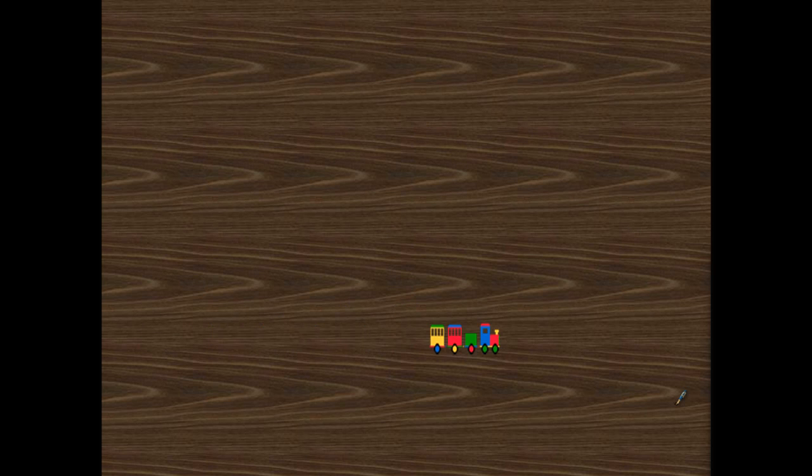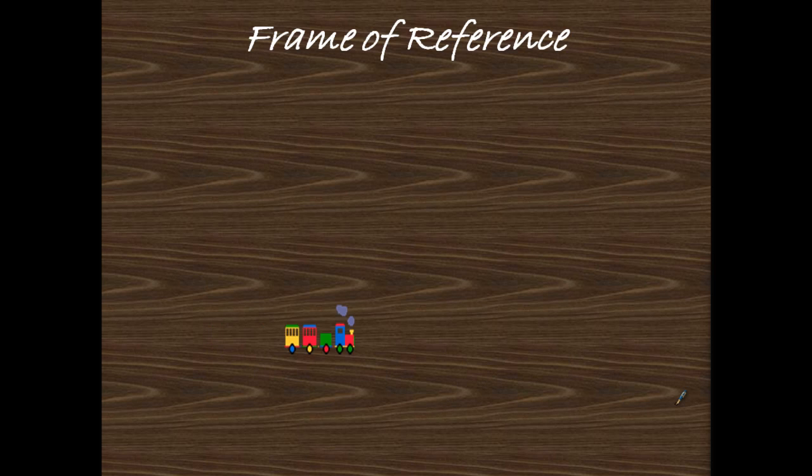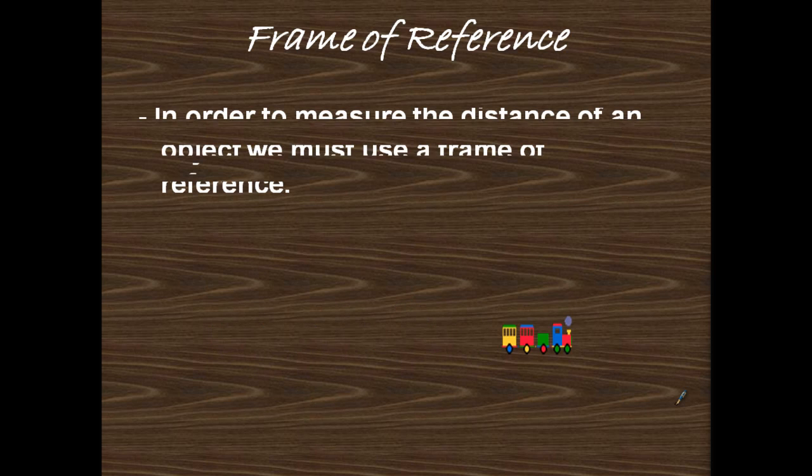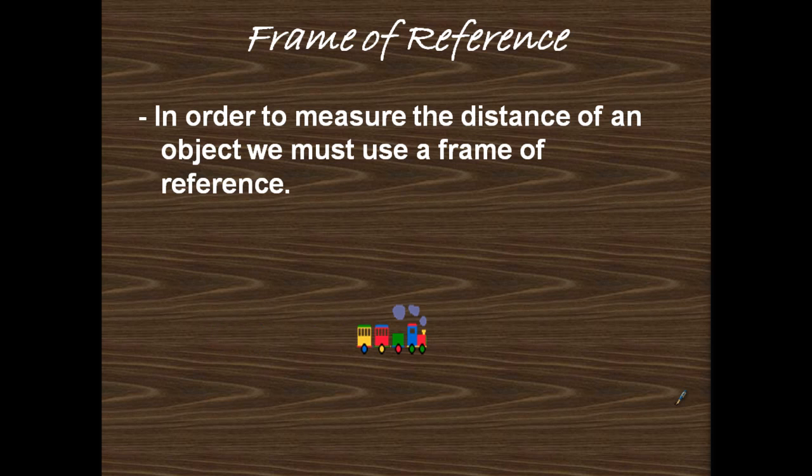See here we have a train. It's moving from left to right. We know that things that move have a velocity. You should know this by now. What about a frame of reference? In order to measure the distance of an object, we must use a frame of reference. We could choose whatever frame of reference we want, but it's important once we choose it, we stick with it.